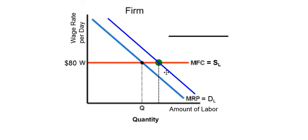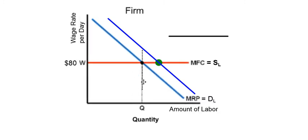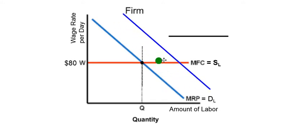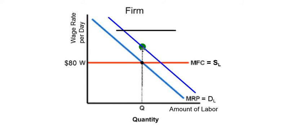The quantity of labor demanded is going to go up and the wage is going to stay the same. It's important to state that if we remained at our original level of labor, our marginal revenue product would actually be greater than the wage rate — and we don't want that. We want them to be equal. That's why we move to a higher quantity of labor, so that we can find our new equilibrium.